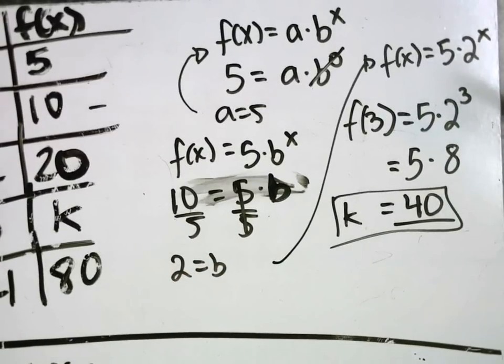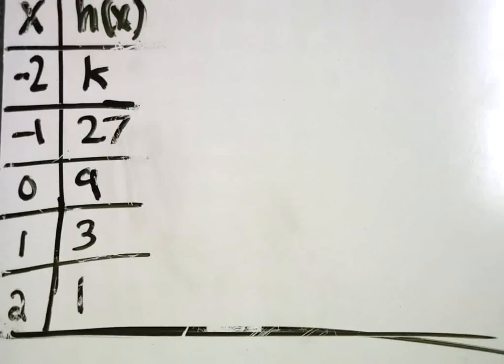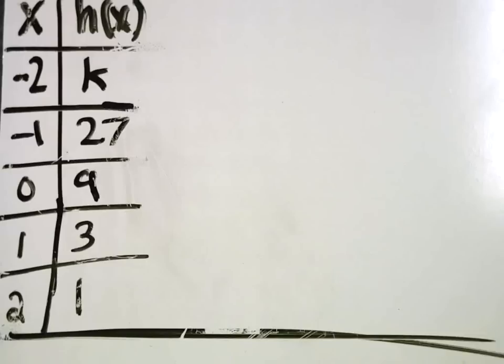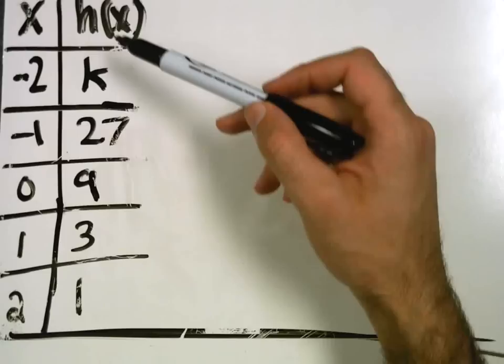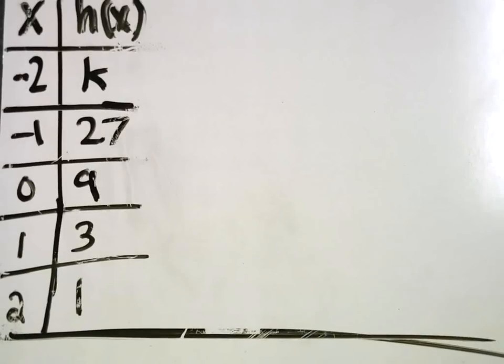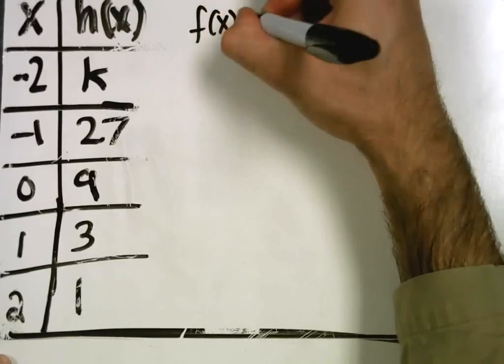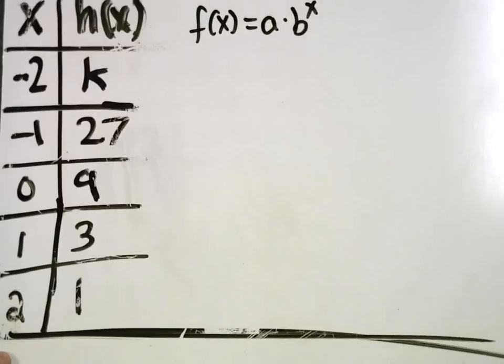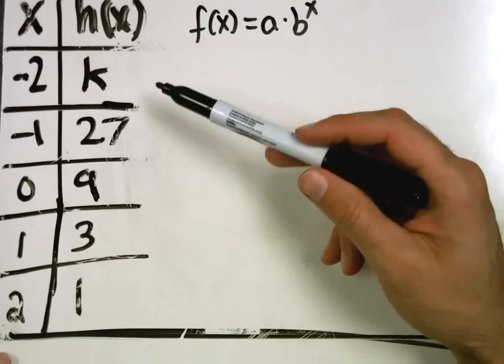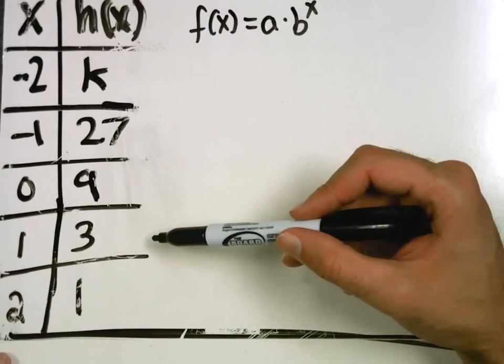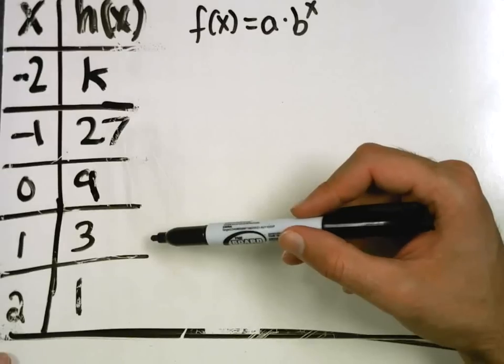Copy this new table down. It's for something called H of X. We've got new information. New X values. New Y values. New formula. H of X. That's right. It's still the same idea though. A times B to the X. Good. Got it copied? For sure? Got all of this written down. Really? Alright. If you're ready then Gerson, let's keep going.